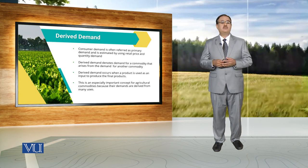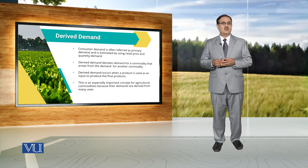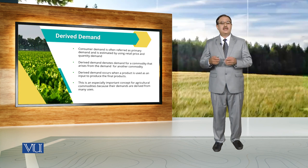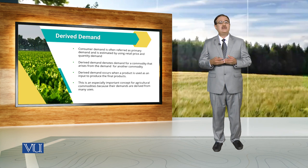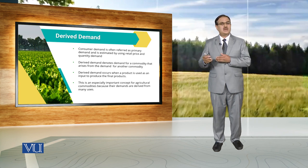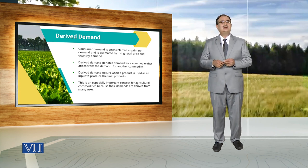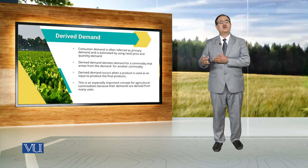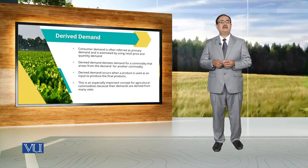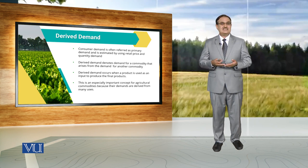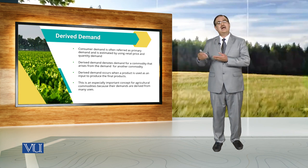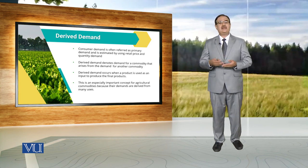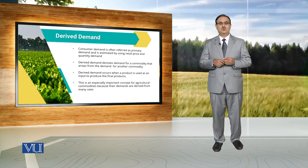If I talk about demand for wheat — what is the demand for wheat at retail level? There is an association between quantity demanded for wheat and price. But there is another demand which we call Derived Demand, and that Derived Demand arises because of demand for certain other commodities where wheat is used as an input.